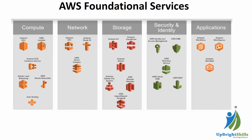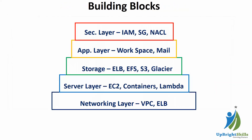AWS foundational services are services that you can bundle together to create your base foundation. You build different layers: first the networking layer where you build a subnet, then on top of it the server layer where you can create EC2 services, virtual instances, containers, or Lambda. For the storage layer you can use S3, Glacier, EBS, and EFS.